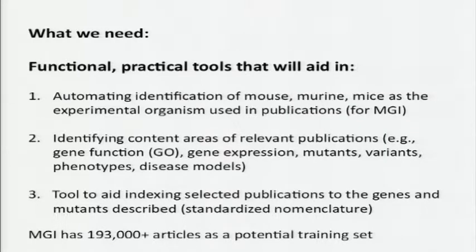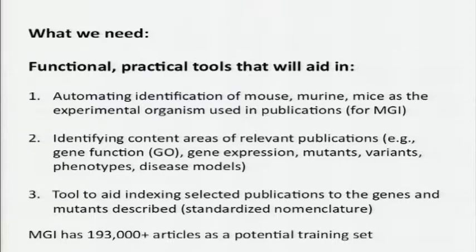What we need is a functional and practical tool that will help us in identifying publications that have mouse, murine, and mice as the experimental organism; identifying content areas of relevant publications — so functional information, expression information, mutants, variants, phenotypes, disease models; and tools to aid in indexing the publications to the genes and mutant alleles described in them using standard nomenclature. That's a big order, but we do have over 193,000 articles that can be used as a test set, which we offer to you.